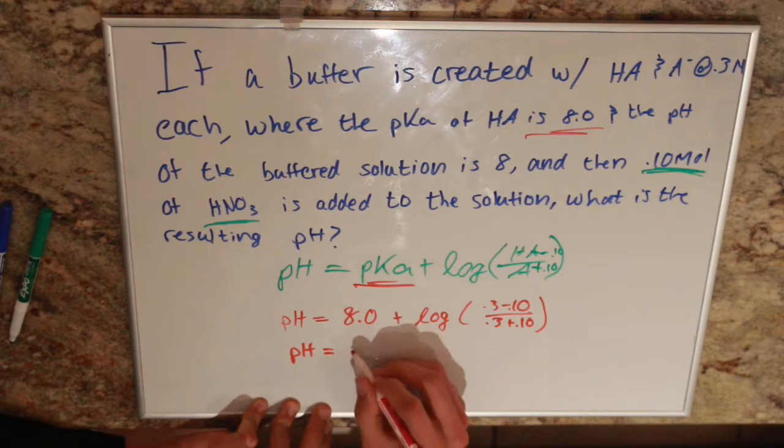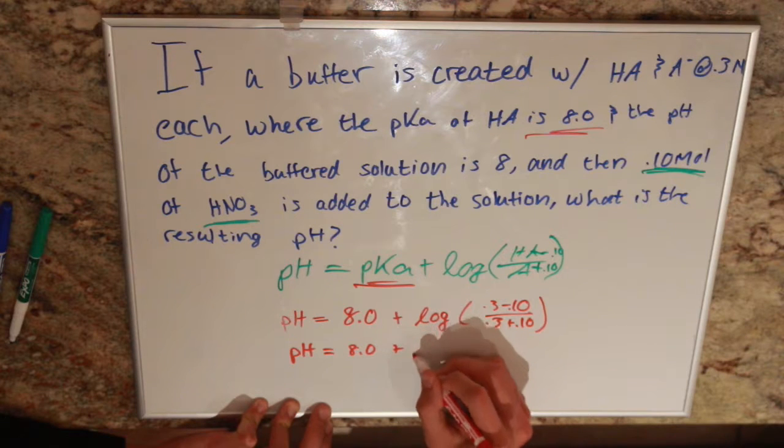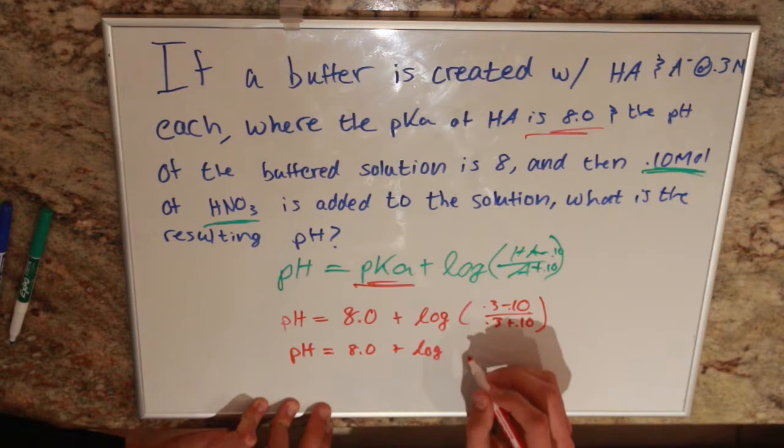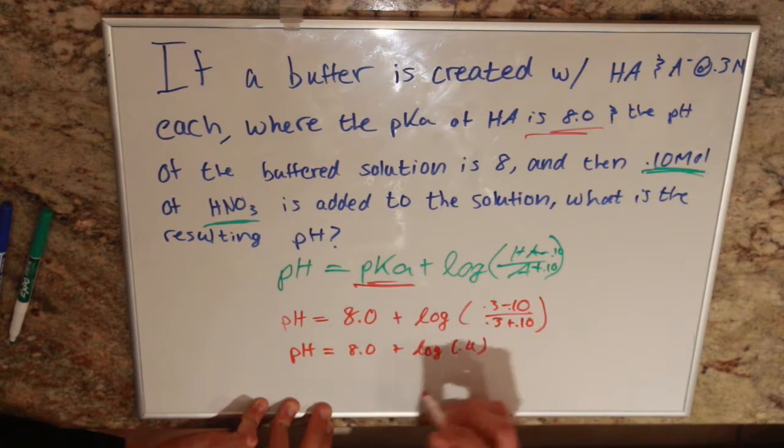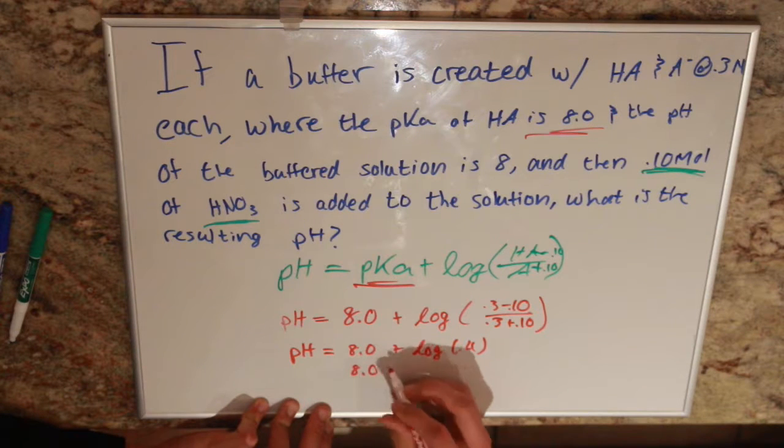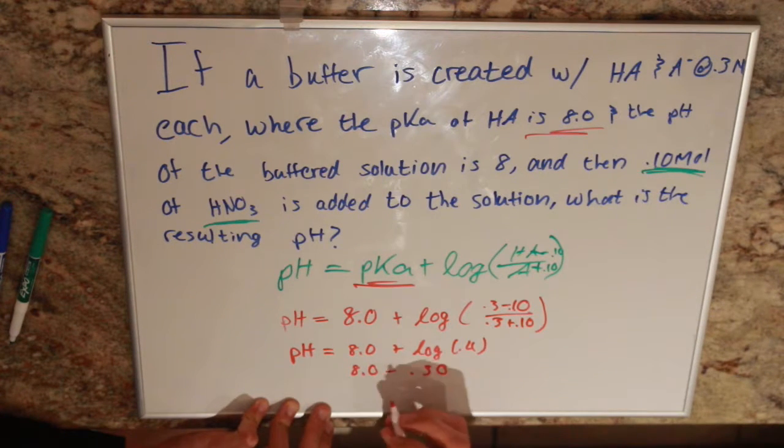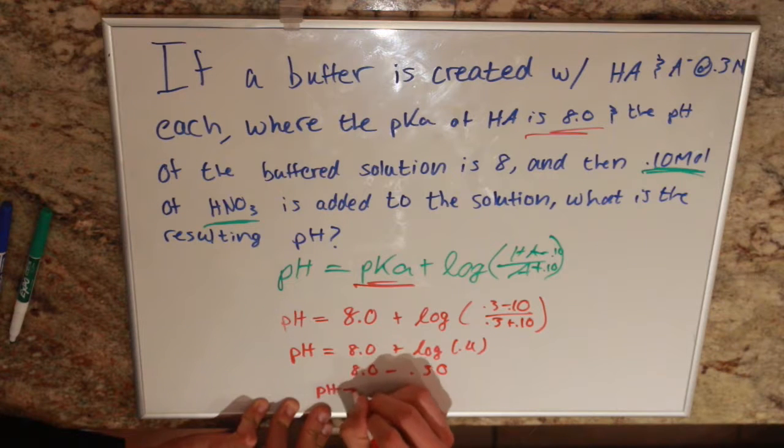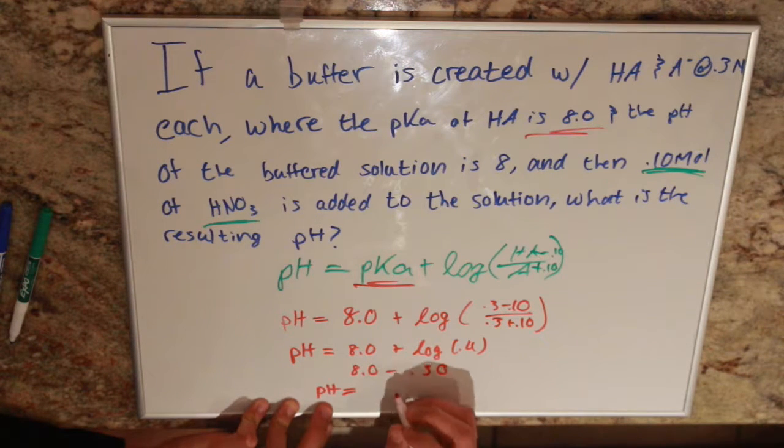So, then we have 8 plus the log of 0.4. And that's going to give us 8 minus 0.30. And our resulting pH, after adding 0.10 moles of nitric acid, is going to be 7.7.